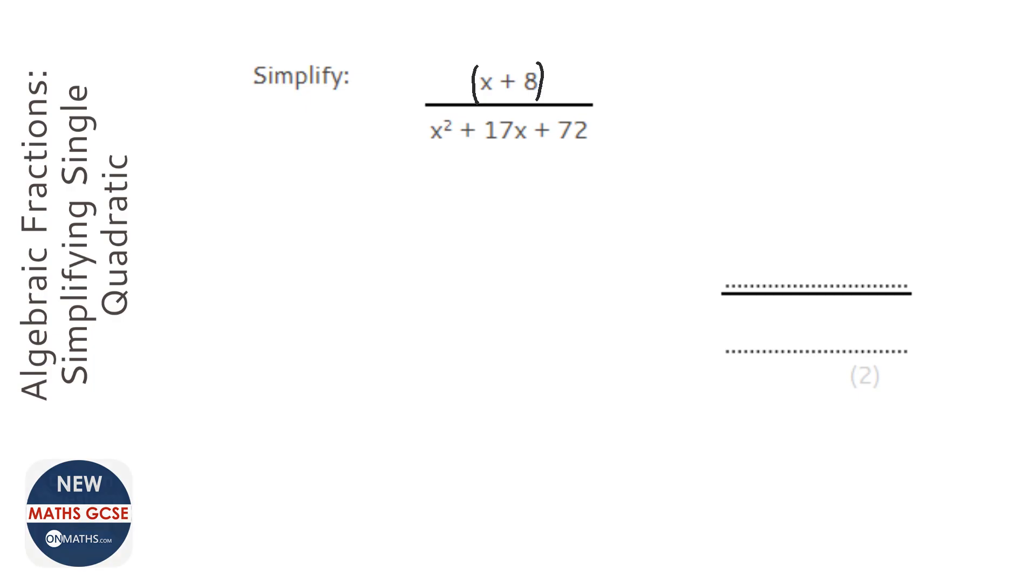With factorizing quadratics, we've got to find two numbers that times together to make 72 and add together to make 17. You can do factor pairs of 72, so 1 and 72, 2 and 36, etc. But looking at the fact they add together to make 17, the numbers are going to be quite small, so I'm thinking it's going to be x and x, and I know that 9 times 8 is 72. So 9 and 8 add together to make 17, so that works.